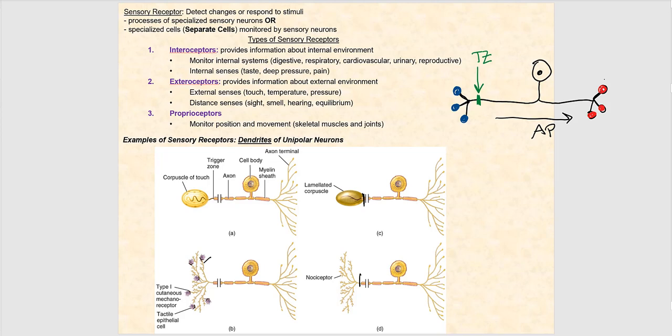The last type of sensory receptors are what we call proprioceptors. These receptors monitor the position and movement of skeletal muscle and joints. We find these proprioceptors embedded in skeletal muscle as well as in joints — specifically the ligaments and tendons associated with the joint.